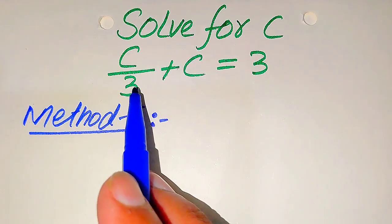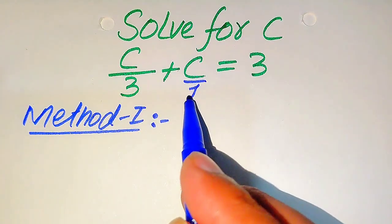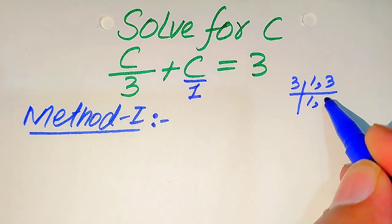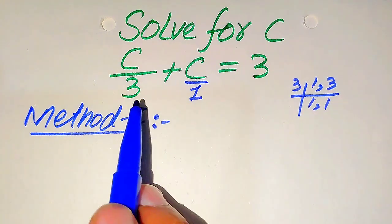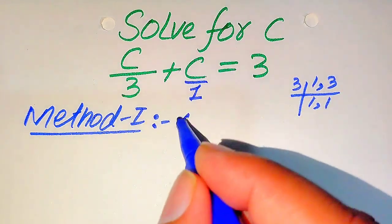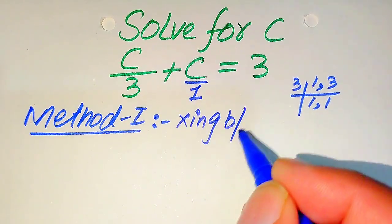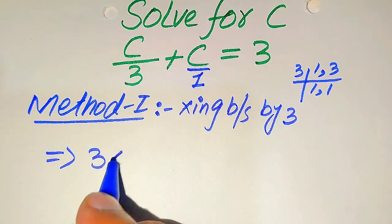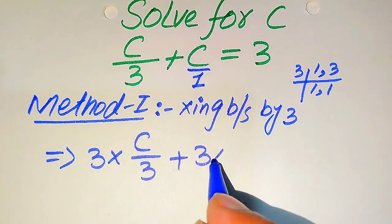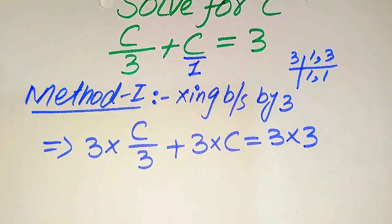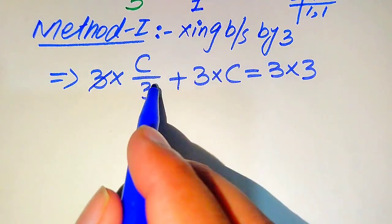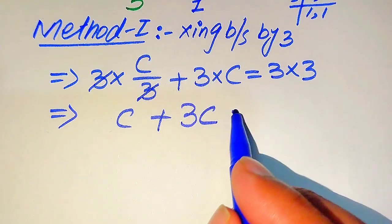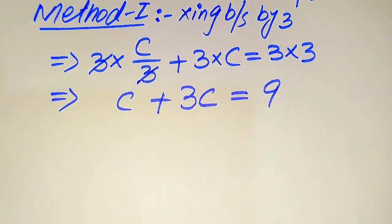In the first method, the denominators of the two terms are 3 and 1. We find the LCM of 3 and 1, which is 3. We multiply both sides by 3. When we multiply each term by 3, we get 3 times C over 3 plus 3 times C equals 3 times 3. This 3 cancels with the denominator, giving us C plus 3C.